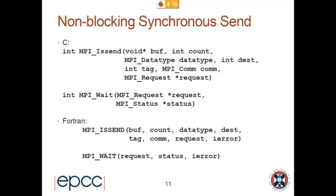Chris is asking if the request pointer is something you've allocated memory for or if it comes from the MPI buffer. It is something you have allocated memory for — most likely stack memory, so you don't have to do a malloc, although you could. You generally only need one or a couple of requests. If you need a lot of MPI requests for whatever reason, you could malloc an array of them. It's just something on the stack — exactly the same as if you're sending a single integer: you declare it somewhere in your code, get it allocated on the stack, and supply the address to the function.